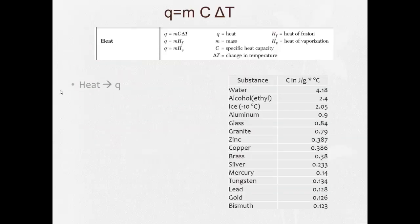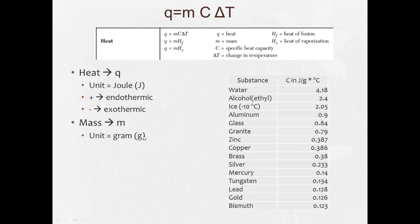Let's take a look at that formula again. So heat is Q, measured in joules. When our answer, or when our Q is positive, that means the reaction is endothermic, something absorbing energy. When it's negative, that means it's exothermic. M is our mass, unit is grams, sometimes kilograms.